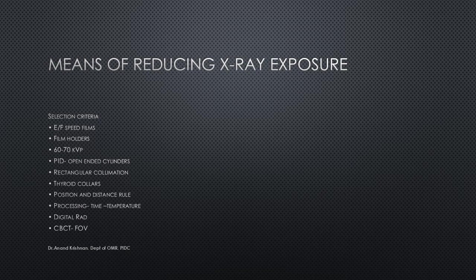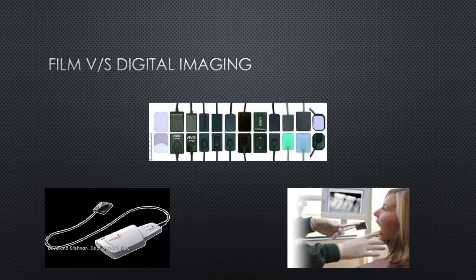Other means of reducing exposure include the use of E-speed and F-speed films, film holders, quality of X-rays produced, position-distance rule, thyroid collars, digital radiography, and monitoring the field of view in CBCT. We will now start with film versus digital imaging.